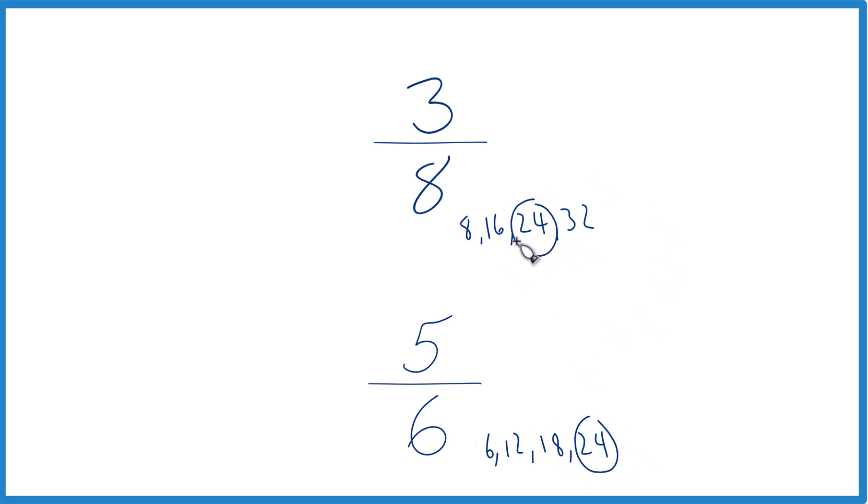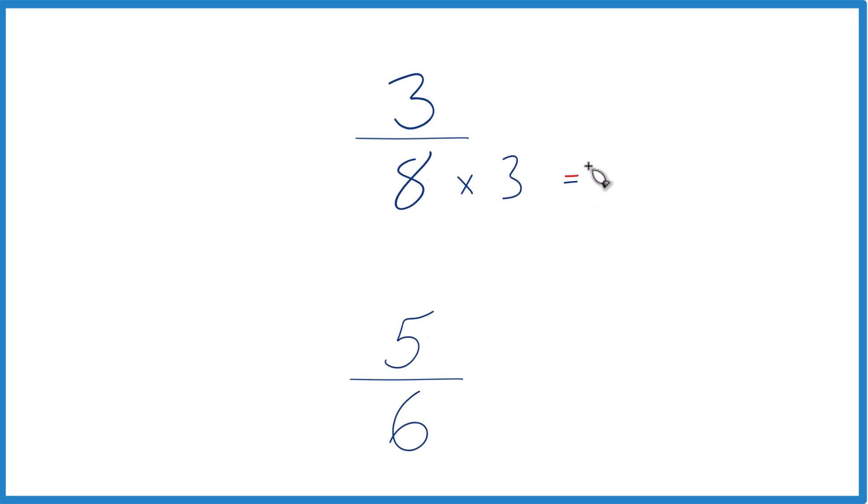That's the number that these two both have in common, the multiple they have in common. So if I multiply 8 times 3, that gives me 24. And down here, if I multiply 6 times 4, that would give me 24.